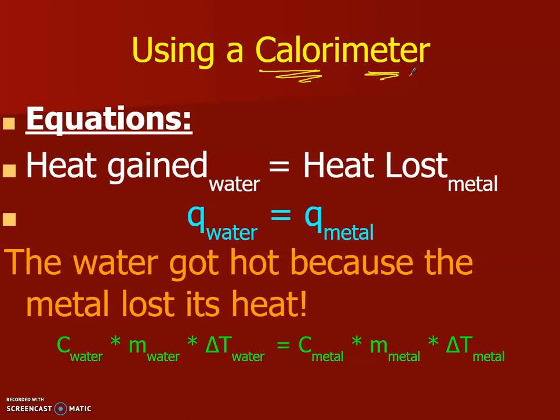Essentially what we do is the heat that is gained by the water in the calorimeter is going to equal the heat that is lost by the metal, if it's perfectly insulated. So that means that the heat quantity of the water is equal to the heat quantity of the metal. Technically this heat quantity of the metal is a negative value, but the quantity itself is going to be the same.